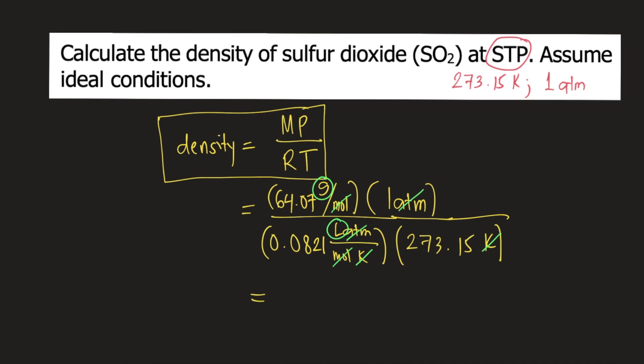So again, the unit for density would be grams per liter. And if you solve for the density of sulfur dioxide at STP, you plug in all the numbers into your calculator. The density is equal to 2.86 grams per liter. And this is the answer to the question.